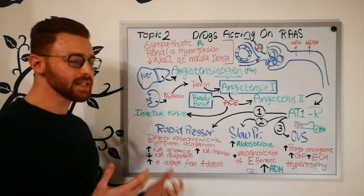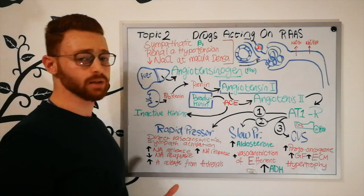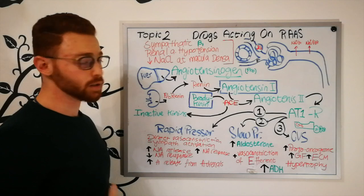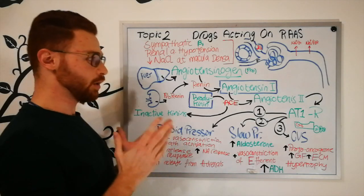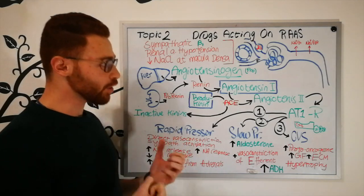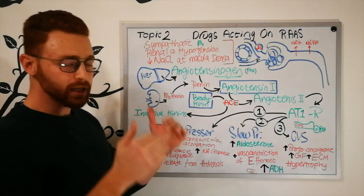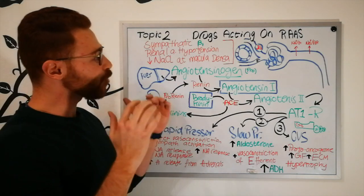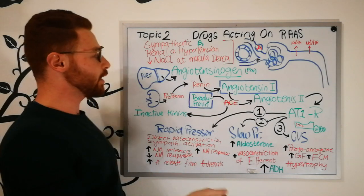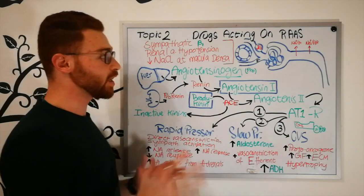Before getting into what activates the RAAS, we have the juxtaglomerular (JG) cells present in the afferent arteriole of each nephron. Their function is to sense the pressure inside the afferent arteriole. Whenever there is a decrease in this pressure, these cells get activated and release pro-renin, which is later converted to renin.